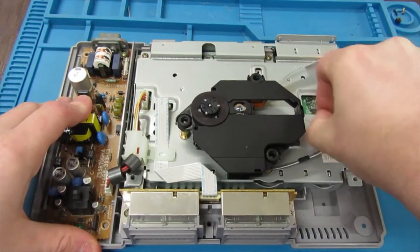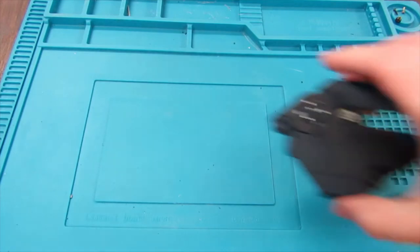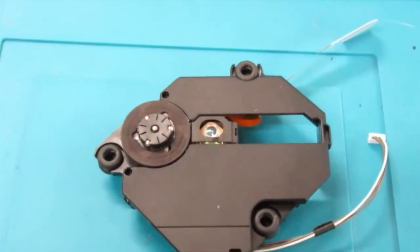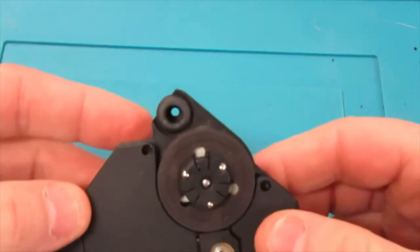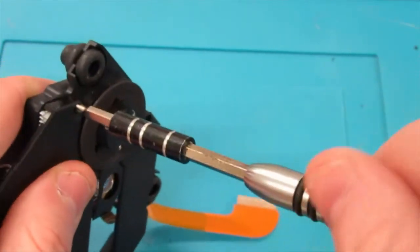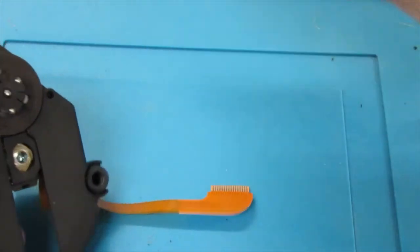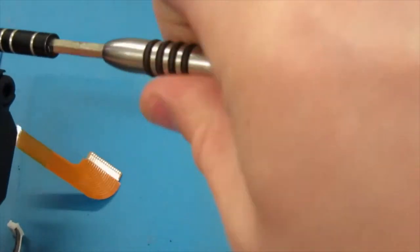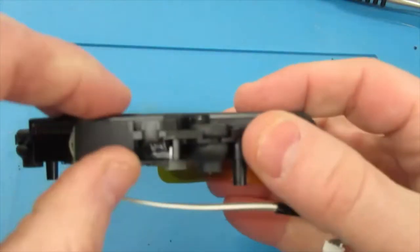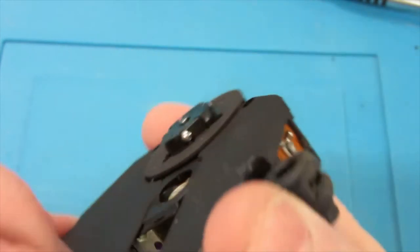Basically to remove the spindle, first you want to remove these two screws off this little shroud, and then it's just held on by little clips here, here and here. This person doesn't have one here.